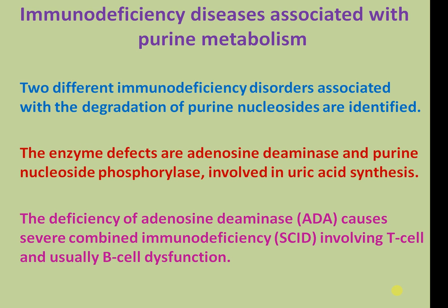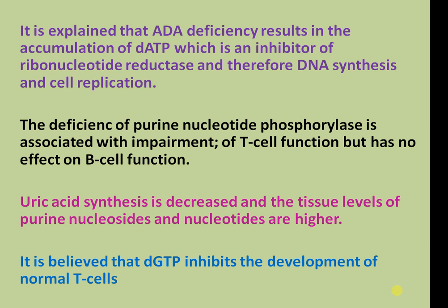Immune deficiency diseases associated with purine metabolism: two different immune deficiency disorders associated with degradation of purine nucleotides have been identified. The enzyme defects are adenosine deaminase and purine nucleoside phosphorylase, both involved in uric acid synthesis. Deficiency of adenosine deaminase causes severe combined immune deficiency involving T-cells and B-cells dysfunction, due to accumulation of dATP which inhibits ribonucleotide reductase and therefore DNA synthesis and cell replication. Deficiency of purine nucleoside phosphorylase is associated with impaired T-cell function but has no effect on B-cell function. Uric acid synthesis is decreased and tissue levels of purine nucleotides are higher; it is believed that dGTP inhibits the development of normal T-cells.